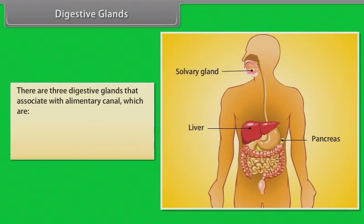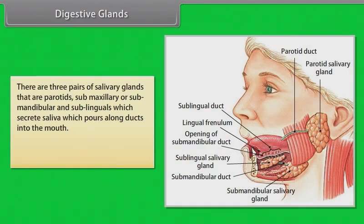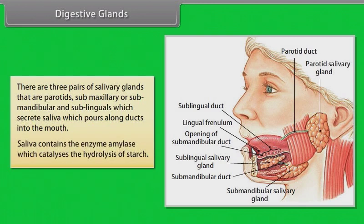There are three digestive glands associated with the alimentary canal: salivary glands, liver, and pancreas. There are three pairs of salivary glands — parotids, submandibular, and sublinguals — which secrete saliva that pours along ducts into the mouth. Saliva contains the enzyme amylase, which catalyzes the hydrolysis of starch.